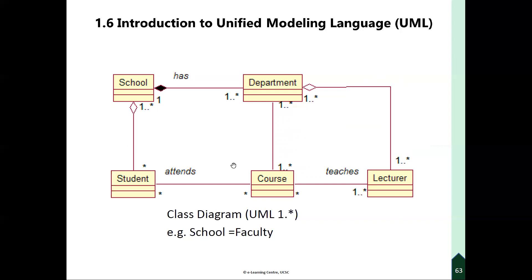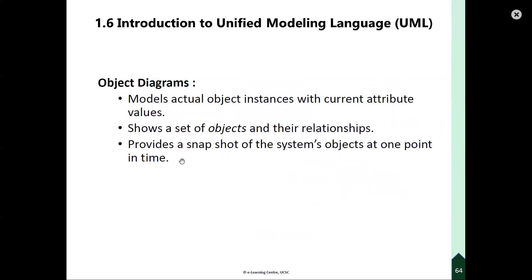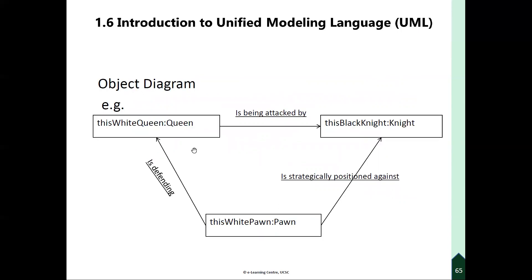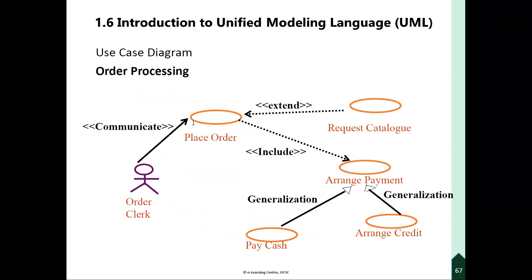In the Object Diagram, there are many students related to courses. The Object Diagram shows specific instances — for example, a student specifically related to a particular course. Another example shows a chess game: there is a white queen, a black knight, and objects related to the chess game. There are many relationships represented in the class diagram, showing functions over the system.